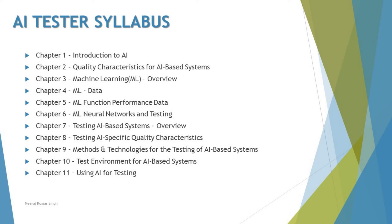Chapter 6 covers ML neural networks and testing. Chapter 7 discusses testing concepts, introducing testing of AI-based systems as an overview. Chapter 8 deep-dives into the quality characteristics of AI testing and how exactly that works. Chapter 9 covers the various methods and technologies for testing AI-based systems, which are uniquely different compared to other systems. Chapter 10 discusses the various environments and configurations needed to perform AI-based system testing. Finally, Chapter 11 talks about how to use AI itself to do AI testing — which is fascinating and very interesting to learn.